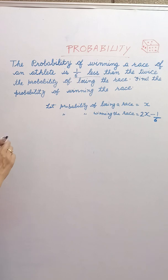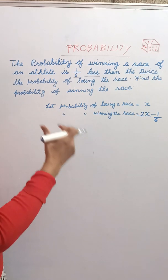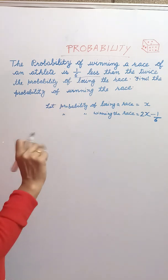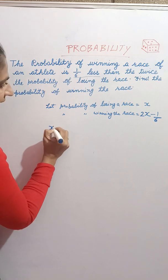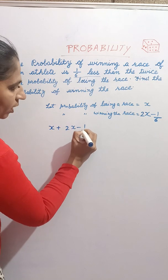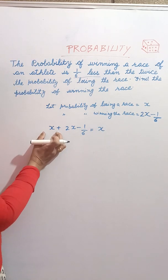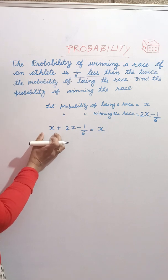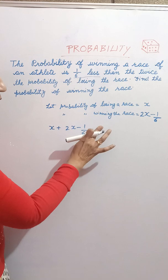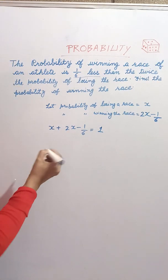Now we know that the probability of an event happening and not happening is always equal to 1. So probability of losing plus probability of winning equals 1. That gives us x plus 2x minus 1 by 6 equals 1.